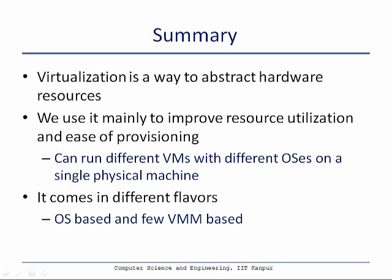Let us summarize what we saw in this lecture. Virtualization basically allows you to abstract hardware resources and expose them as software entities, which are much easier to manipulate, manage, and operate than their physical hardware counterparts. We use virtualization mainly to improve resource utilization in data centers so we can run different virtual machines on a single shared underlying hardware, often with different operating systems. These virtualization technologies come in different flavors — OS-based, or hypervisor/VMM-based, which can further be hosted or bare metal.